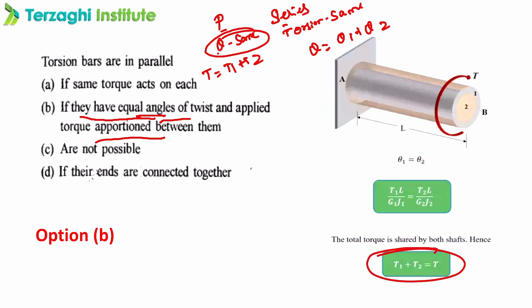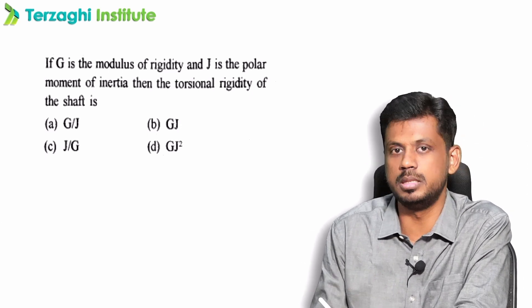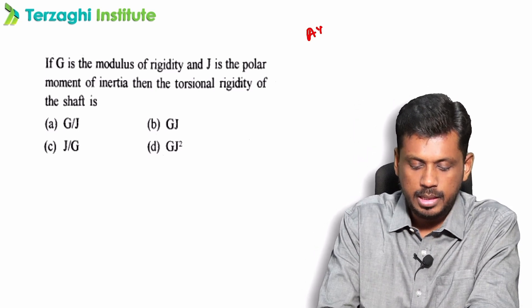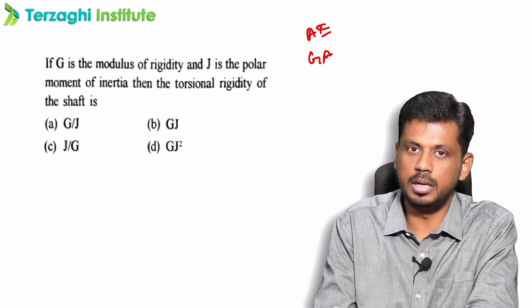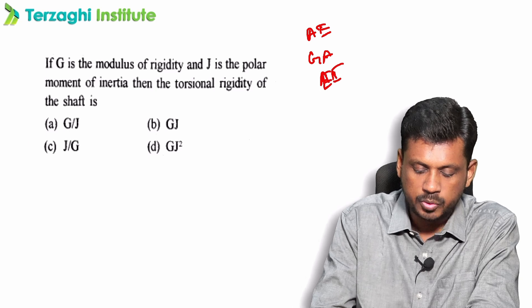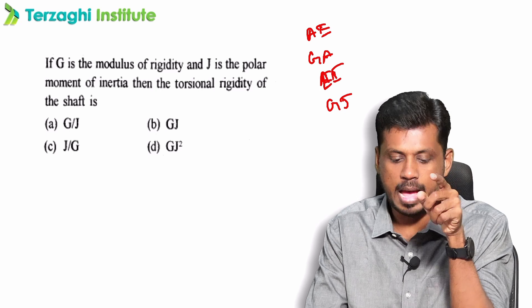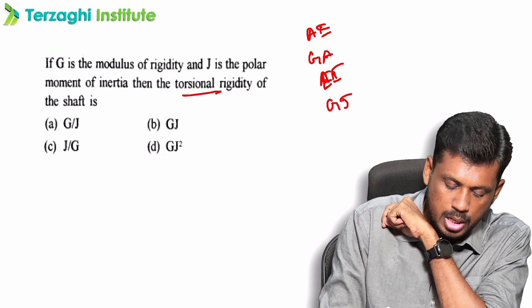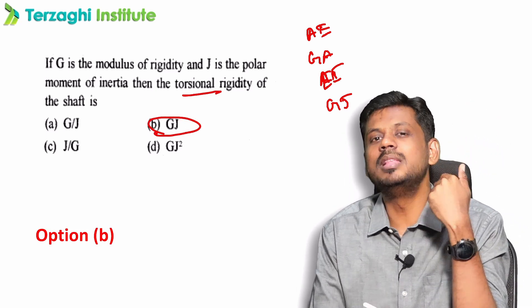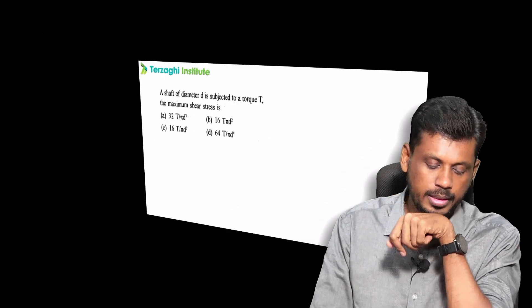The modulus of rigidity and J is the polar moment of inertia. Torsional rigidity: AE stands for axial rigidity, GA stands for shear rigidity, EI stands for flexural rigidity, GJ stands for torsional rigidity. The answer for torsional rigidity is GJ.